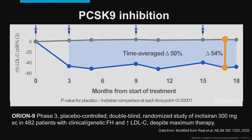PCSK9 inhibition is quite effective. This is data from a study in 482 patients with clinical or genetic FH and elevated LDL despite maximum therapy. Inclisiran is an antisense therapy directed towards PCSK9, and it remarkably only requires six monthly subcutaneous injections. In this study there was a very nice 50% reduction over time in patients who were not at goal despite maximum therapy.